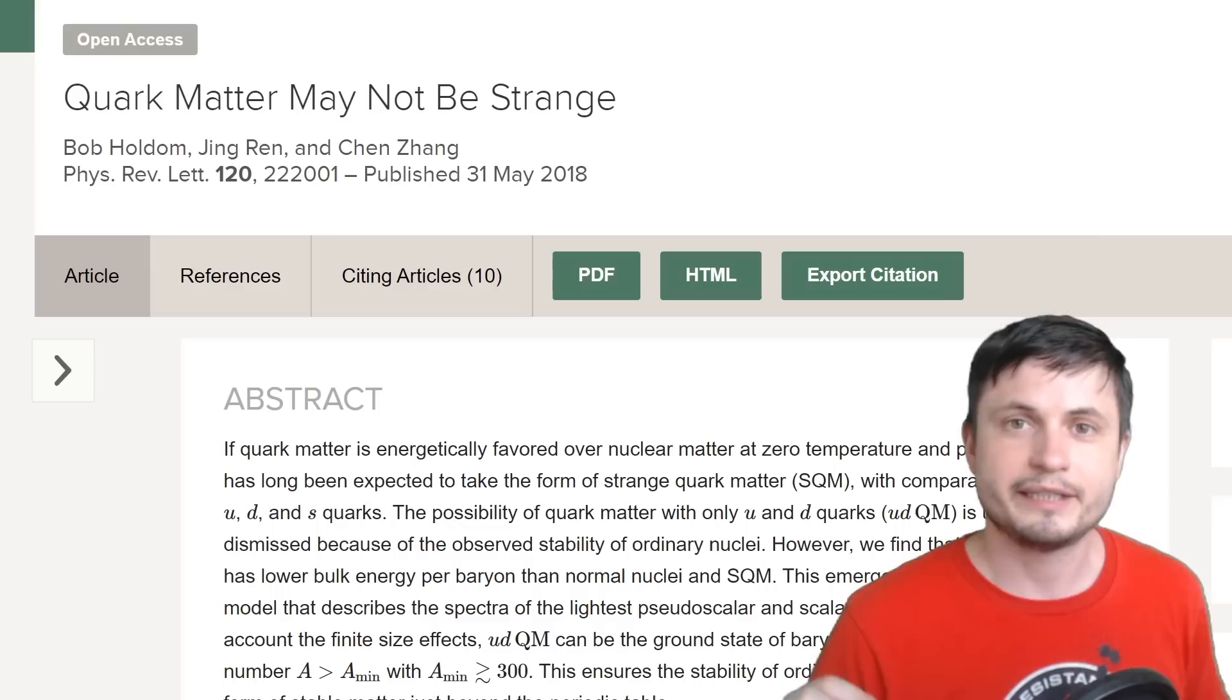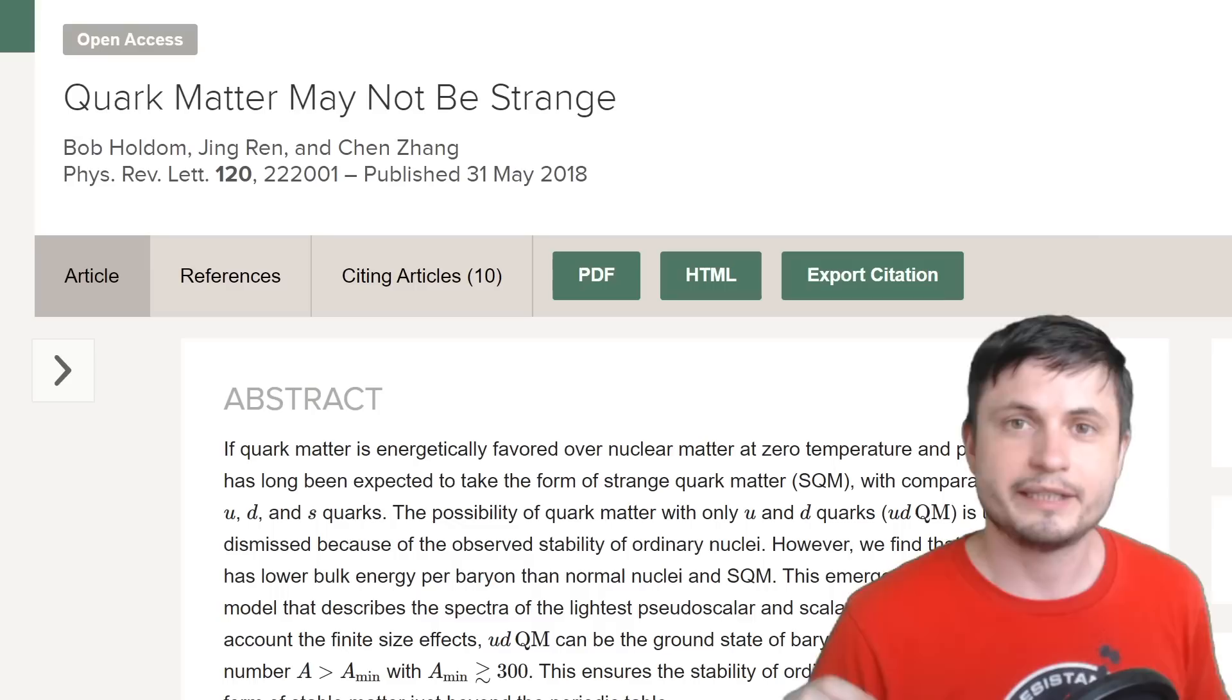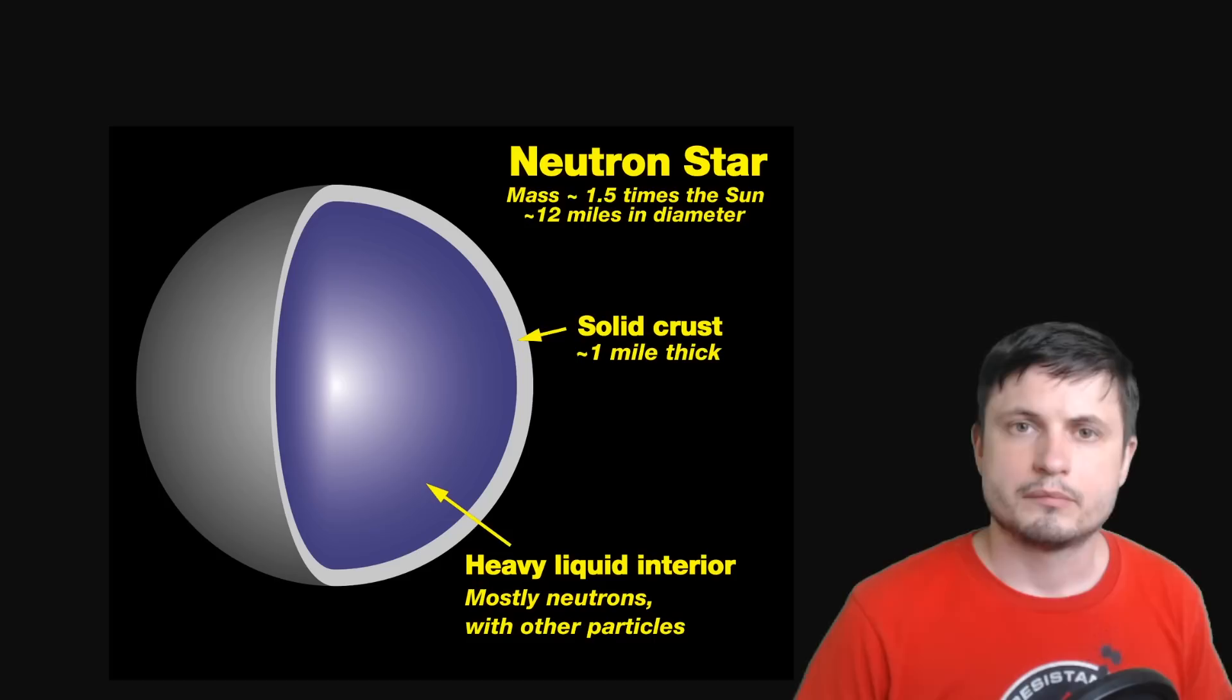the extremely massive atoms with masses of over 315 atomic masses will actually become quark matter stable at regular temperatures. The scientists behind this paper estimated that it's even more stable than iron,